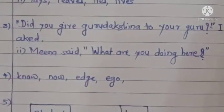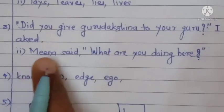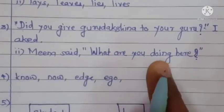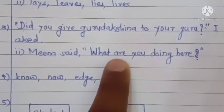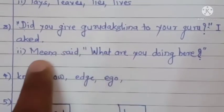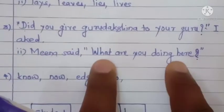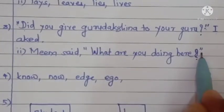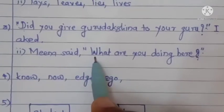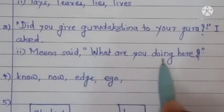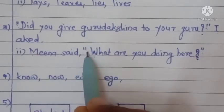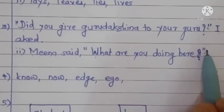The second sentence is: 'Meena said, "What are you doing here?"' This should be the direct narration — 'What are you doing here?' is the reported speech which goes in double inverted commas. 'Meena' is a proper noun, so capital M. Meena said comma, double inverted comma, capital 'What are you doing here?' question mark, double inverted comma. So: Meena said, "What are you doing here?" Scoring two out of two marks is quite simple.